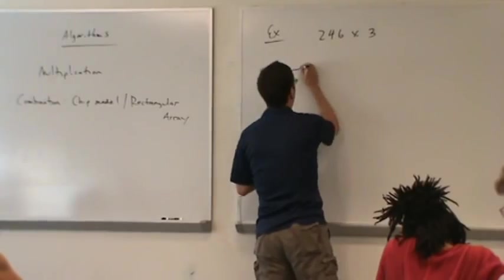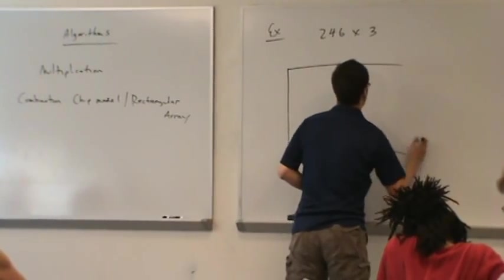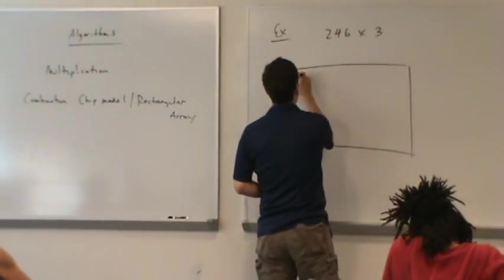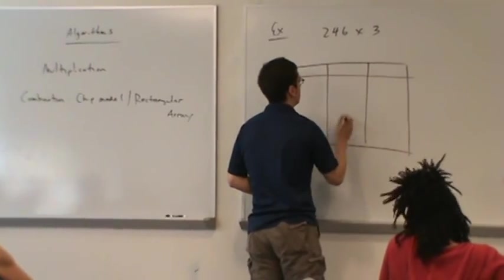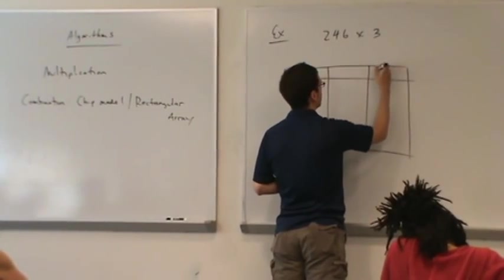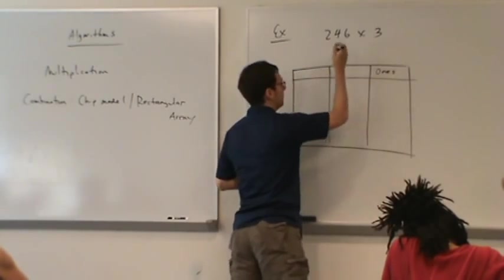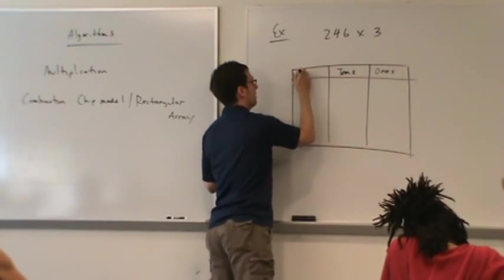You're going to start by drawing your model. The model is going to look kind of the same as it did for addition and subtraction. We need three place values: ones, tens, and hundreds.